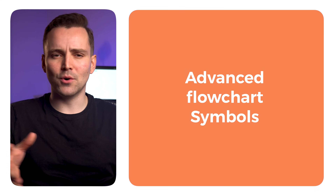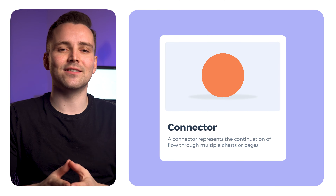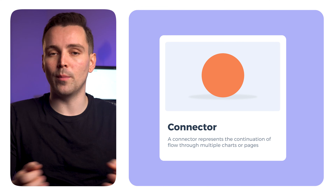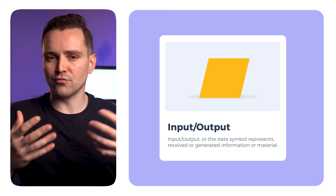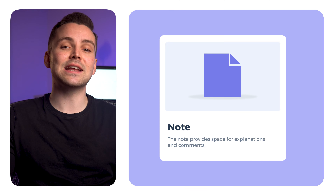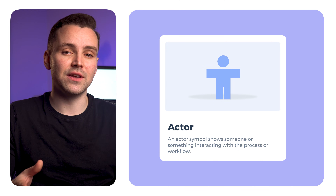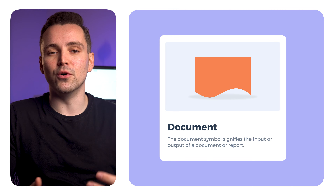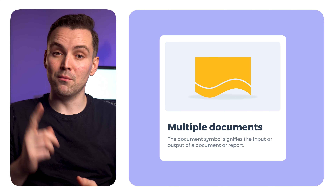To create deeper meaning or chart a more specific scenario, there are more advanced symbols. A connector represents the continuation of flow through multiple charts or pages. Input, output, or the data symbol represents received or generated information or material. The note provides space for explanations and comments. An actor symbol shows someone or something interacting with the process or workflow. The document symbol signifies the input or output of a document or report. This one is for more than one.